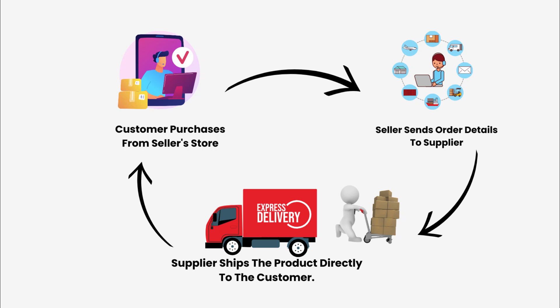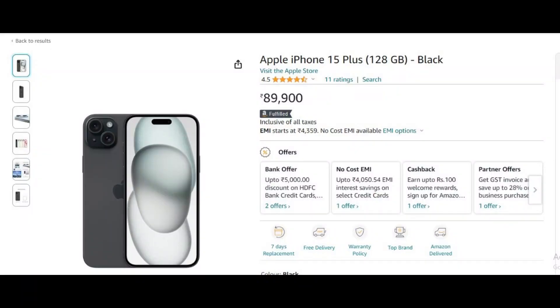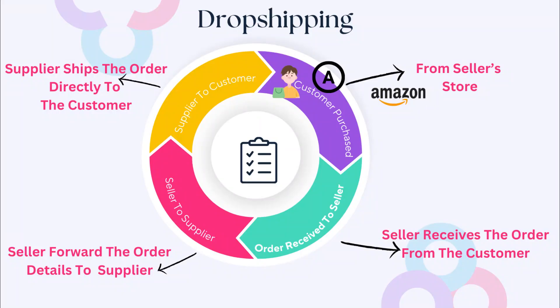Now let us understand what dropshipping is. Dropshipping is where you are not the owner of the product. You actually have a contract with the supplier, dealer, or a manufacturer — let us say for a phone — and you have a customer from a marketplace, for example Amazon. So there is a customer by the name A who buys a phone from Amazon. You are the seller but you have sourced that phone from a supplier or a dealer. As soon as you get the order, you ask the supplier or the dealer to send that phone to customer A at their address, so it gets shipped to the customer directly from the owner of the product.